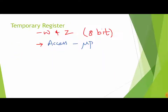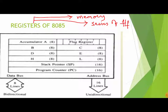To revise: the 8085 microprocessor has an accumulator register which holds one of the operands and also collects the result. The flag register gives the status of the current result processed by the ALU. B, C, D, E, H, and L are the general purpose registers. The stack pointer is a special purpose 16-bit register that holds the address of the top of the stack. The program counter is a 16-bit register that holds the address of the next instruction to be executed.